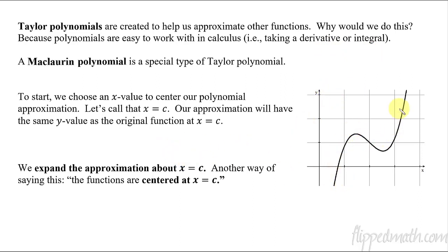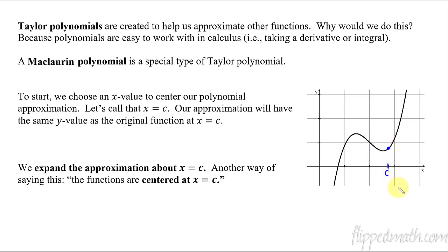So this is how we do it. We have some function — I've just graphed a random function here. We want to create an approximation to it. The way we do that is we start at some x value, and we're going to call it x equals c. I'm just going to choose a point here on the graph somewhere, right about there, and say that is the x value of c. Some textbooks might use the letter a; it just kind of depends, but it's just an x value.